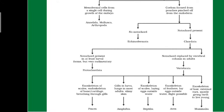Absence of notochord is seen in Echinodermata, while presence of notochord is seen in chordates. Chordates are divided: notochord present at least in larva form but rudimentary gives Protochordata (hemichordata), and notochord replaced by vertebral column in adult gives Vertebrata. These vertebrates are five classes, classified on different structural features — the first being class Pisces: exoskeleton of scales, endoskeleton of bone and cartilage, breathing through gills.